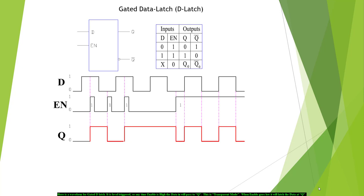Here is a waveform for a gated D-latch. It is level triggered, so any time enable is high and the data in will pass to Q. This is transparent mode. When enable goes low, it will latch the data at Q.